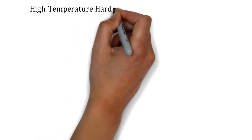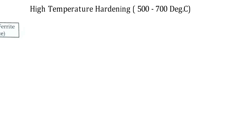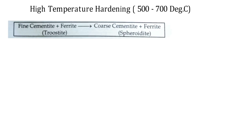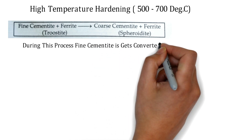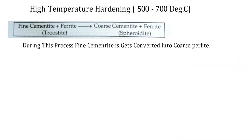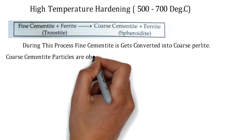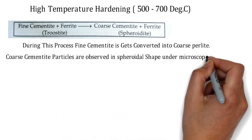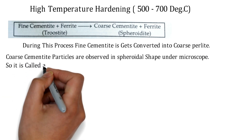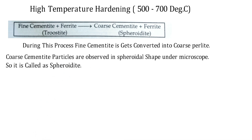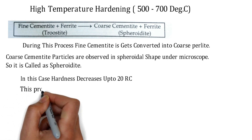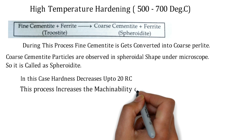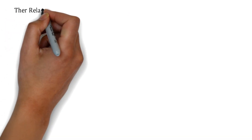High temperature tempering is done between 500 to 700 degrees Celsius. The troostite obtained from medium temperature tempering gives coarse cementite and ferrite, which is called spheroidite. During this process, the fine cementite gets converted into coarse pearlite, and these coarse cementite particles are observed in a spheroidal shape under the microscope — hence it is called spheroidite. In this case, hardness decreases to approximately 20 Rockwell hardness, and this process significantly increases the machinability of the material.